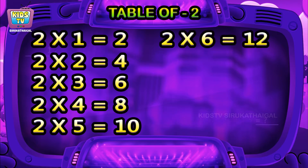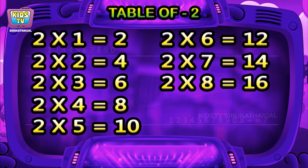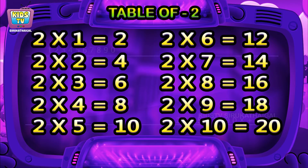Two six is twelve, two seven is fourteen, two eight is sixteen, two nines is eighteen, two tens is twenty.